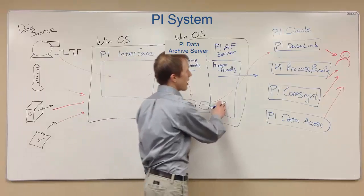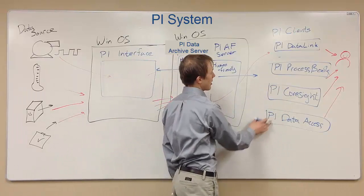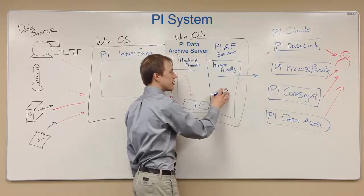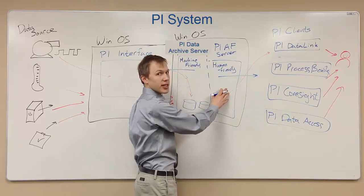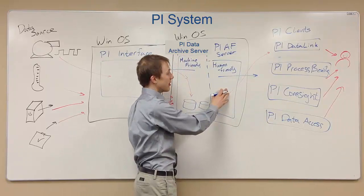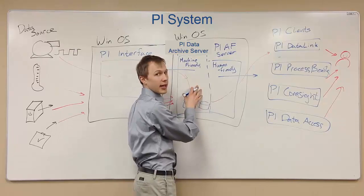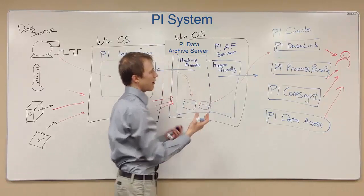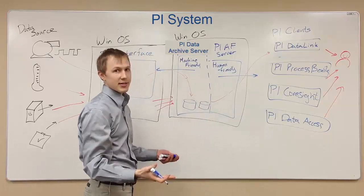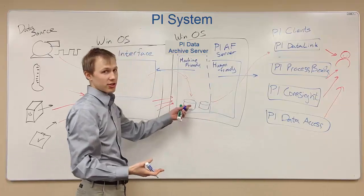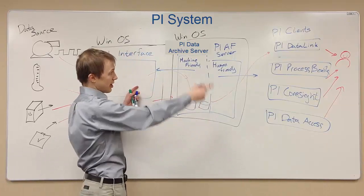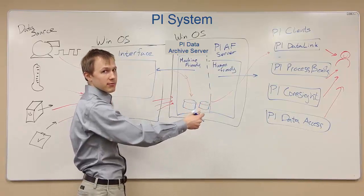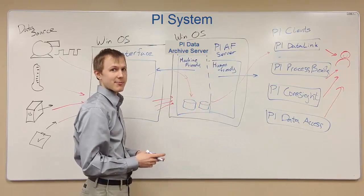Now with PI ProcessBook, PI Coresight, and PI DataLink, we can see a human-friendly chart and organization of the data while still accessing all the process data over an entire history. And with this, we now have the basic PI System. There's a server, there's an interface, there's clients, and there's something being recorded. That's it — that's the basic PI System.